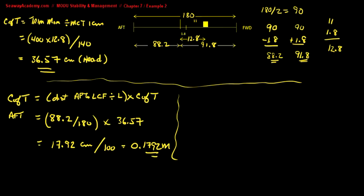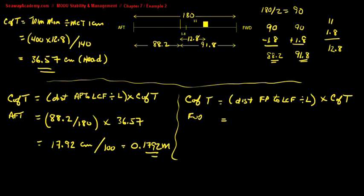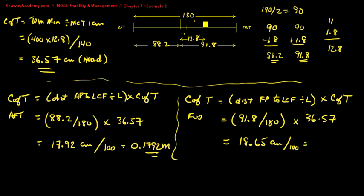To calculate your change of trim forward, it's the distance from the forward perpendicular to the longitudinal center of flotation divided by the length, times your change of trim. The distance from the forward perpendicular is 91.8 meters. Divide this by the total length of 180, times the change of trim of 36.57. Your change of trim forward is 18.65 centimeters. Convert to meters by dividing by 100, giving 0.1865 meters.